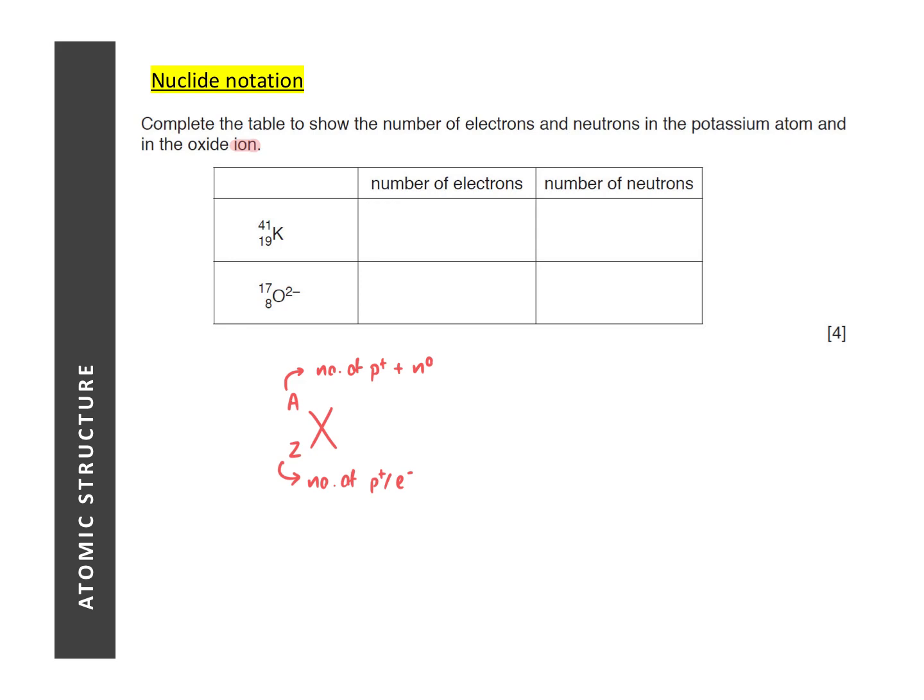The next very common question in atomic structure is to find the number of protons, electrons, neutrons, given the nuclide notation of an atom of that element. This is something that we have also learned in lower secondary, so I'm not going to elaborate too much on it. But when you are looking at such questions, one important thing to take note is to look out for ions. What are ions? Ions are charged particles that are formed when atoms lose or gain electrons.